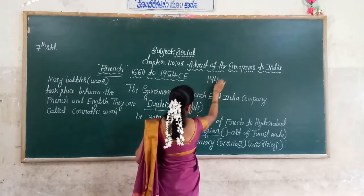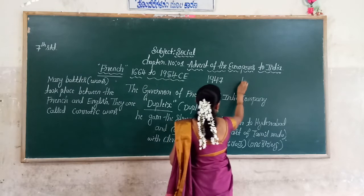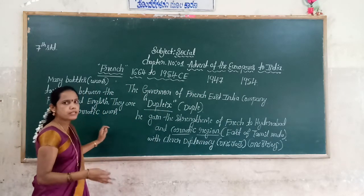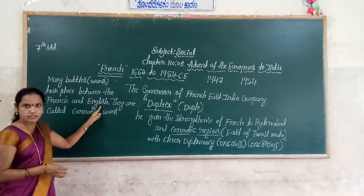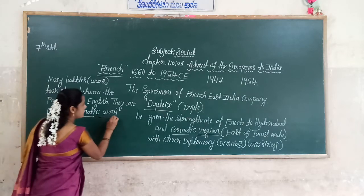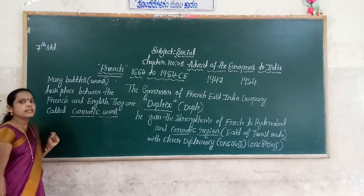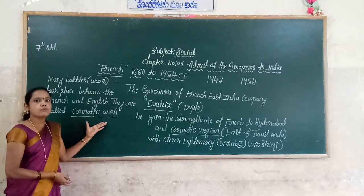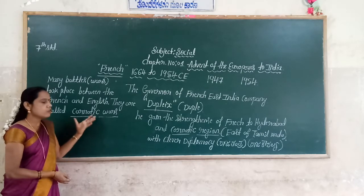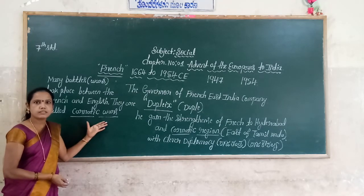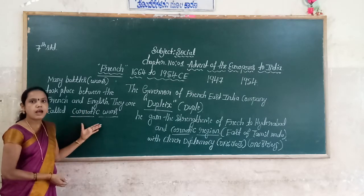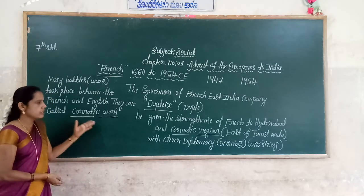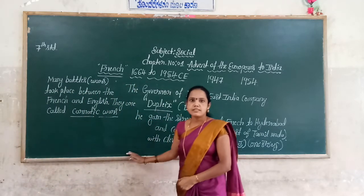The English were stayed up to 1947, and the French stayed in India until 1954. That time, so many battles happened between English and French — these are the Carnatic Wars. Very very important. In the next lesson, we will discuss the Carnatic Wars — what are the reasons, what are the effects, and what are the causes of the Carnatic Wars between the French and English. These are all the strengths of French in India.